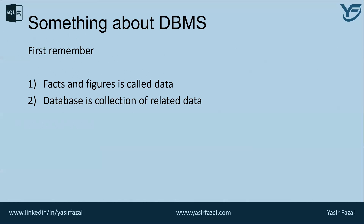Our database management system stores data in such a way that it becomes easier to retrieve, manipulate, and produce information. There are some properties — first, ACID properties. DBMS follows the concept where A stands for Atomicity, C for Consistency, I for Isolation, and D for Durability — abbreviated as ACID. These concepts are applied on transactions which manipulate data in the database. ACID properties help the database stay healthy in multi-transactional environments and in case of failure. We will learn more about ACID in detail in future blogs.